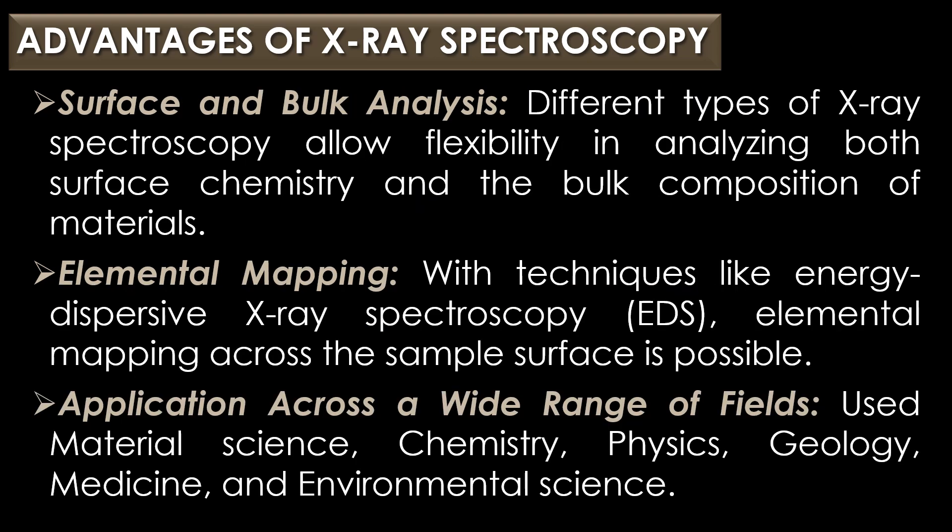Surface and bulk analysis: different types of X-ray spectroscopy allow flexibility in analyzing both surface chemistry and the bulk composition of materials. Elemental mapping: with techniques like energy dispersive X-ray spectroscopy (EDS), elemental mapping across the sample surface is possible. This can provide spatial distribution of elements, crucial for studying inhomogeneous samples or materials with complex structures.